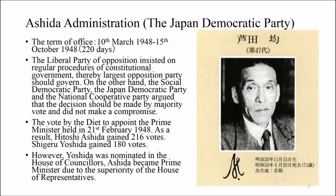As a result, Hitoshi Ashida gained 216 votes and Shigeru Yoshida gained 180 votes. However, Yoshida was nominated in the House of Councilors. Ashida became Prime Minister due to the superiority of the House of Representatives.